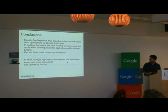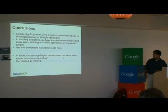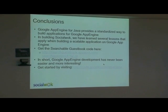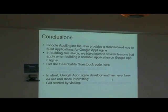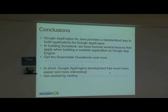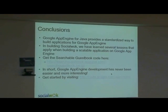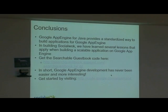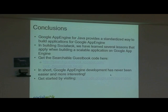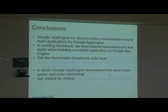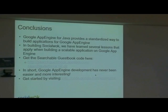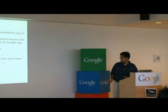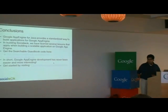In conclusion, Google App Engine for Java is a standardized way to build apps on App Engine, so you don't have many excuses for not trying it. In building Social Walk, we learned several lessons which I've shared today. You can get the code at searchguestbook.appspot.com as searchguestbook.tar.gz, and get started at code.google.com/AppEngine.